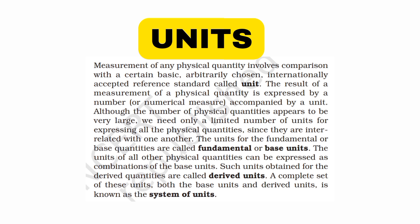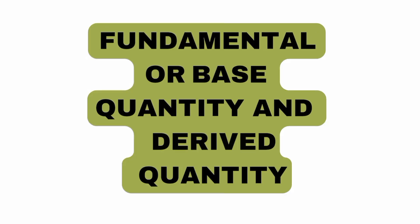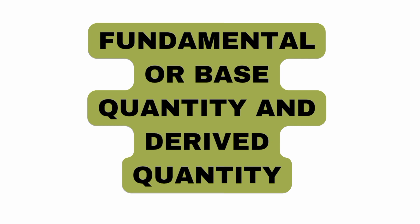For distance, the units are meter, kilometer, and centimeter. For mass, the units are gram and kilogram. That is how we use units. Now, physical quantities are of two types: fundamental quantities (also called base quantities) and derived quantities.